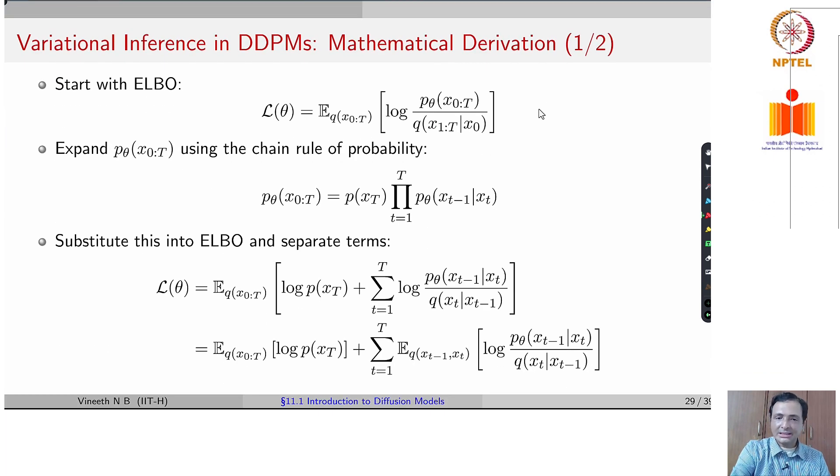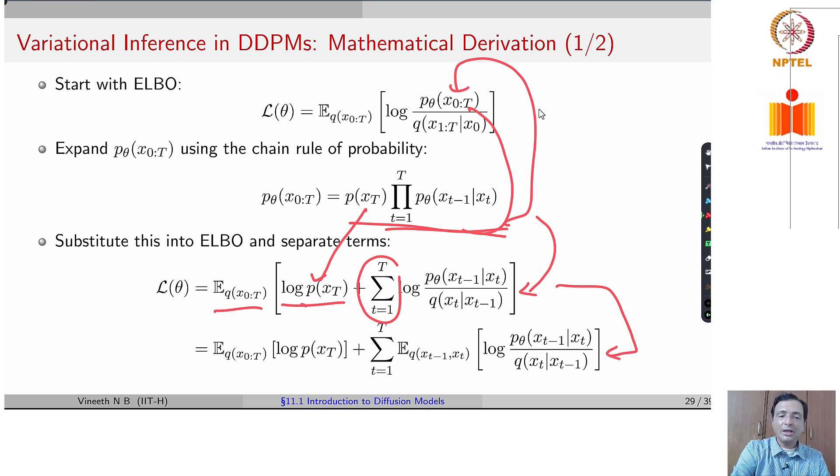So you have p of xt into p theta of x t minus 1 given x t and so on. You substitute this into your ELBO term and separate out the terms to end up getting expectation of q x0 to t log of p xt. And when you put this product into this term, you end up getting the summation because of the log and you have log p theta xt minus 1 given xt divided by q xt given xt minus 1.